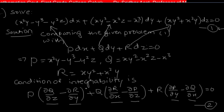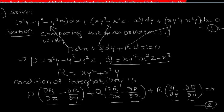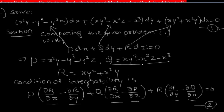Now we find all the required partial derivatives. Differentiating Q = xy² - x²z - x³ with respect to z: the first term has no z, so it gives 0; the second term gives -x²; the third term also has no z, giving 0. Therefore ∂Q/∂z = -x².